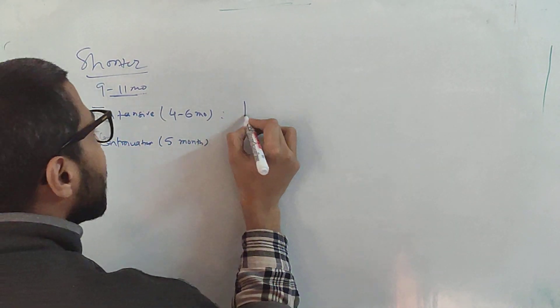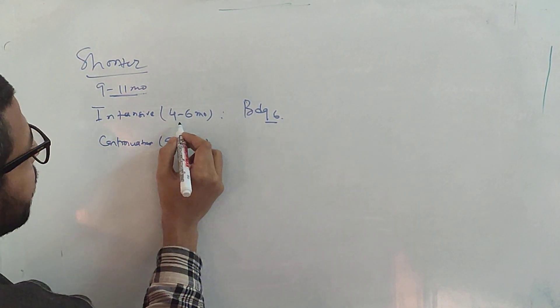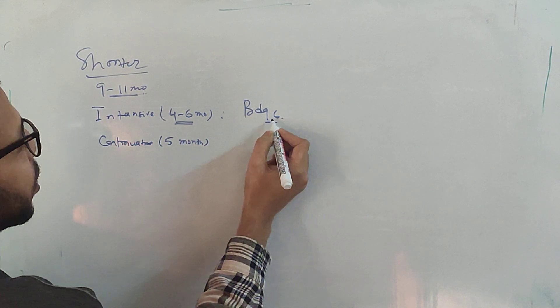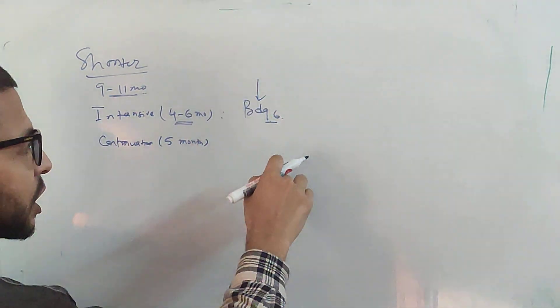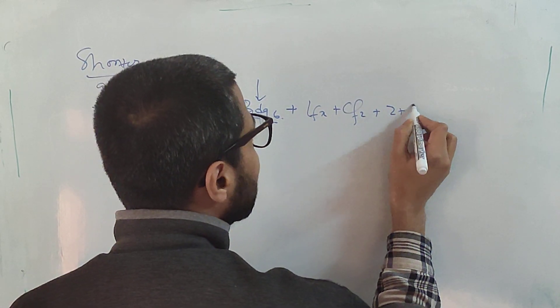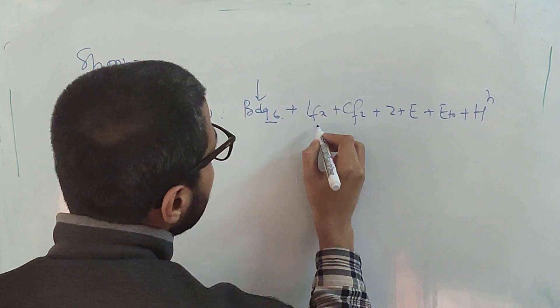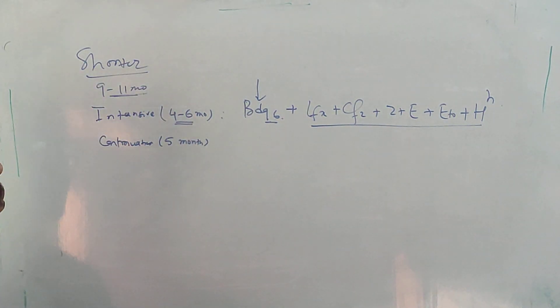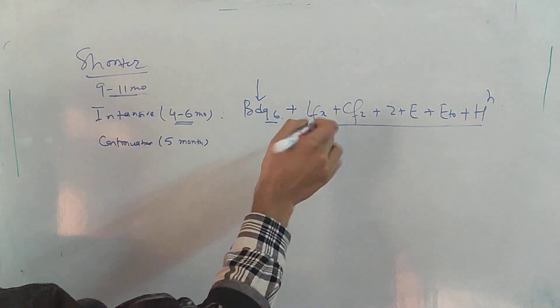In the intensive phase, bedaquiline is given for a fixed 6 months — not more, not less. Other drugs like fluoroquinolones (levofloxacin), clofazimine, pyrazinamide, ethambutol, and ethionamide or prothionamide can be given for 4 months if the patient has a negative sputum after 4 months. If the sputum is still positive, continue for 6 months.